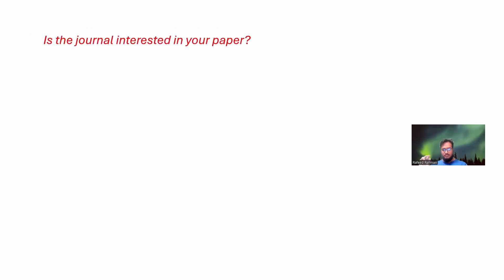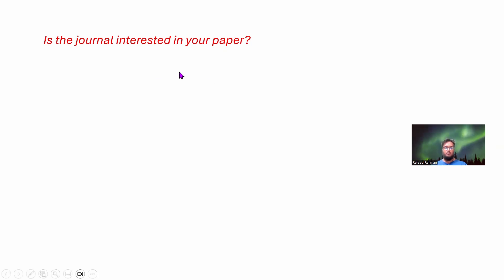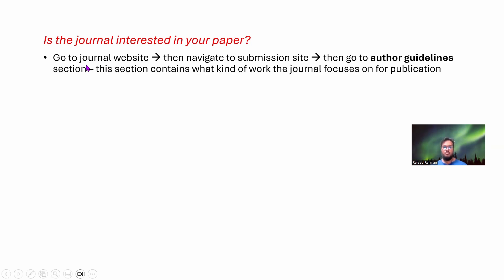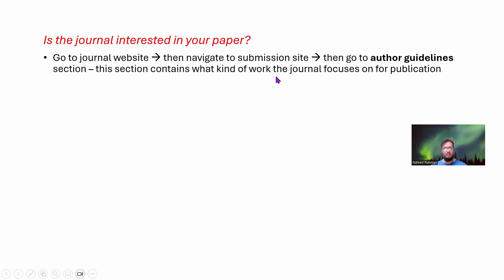Now, is the journal interested in your work? That is something you need to know before even submitting, or else your paper will just be rejected. If you want to know what things a journal is interested in, the first thing you should do is go to the journal website, navigate to the submission site, and then go to the author guidelines section. In this section they actually give the scope of the journal and what kind of work they're interested in.